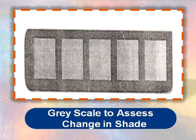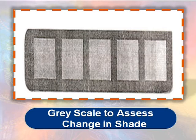For assessing the change in shade, a grayscale is used. The fastness property is then expressed in terms of grade 1 to 8 in the case of light, and a scale of 1 to 5 in the case of agencies other than light.